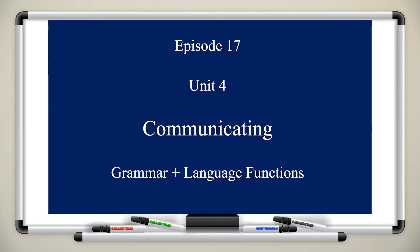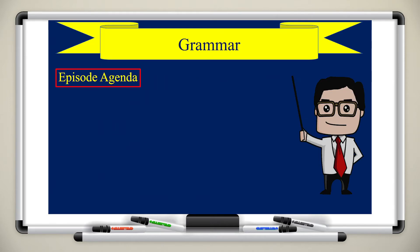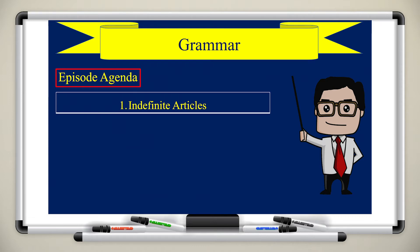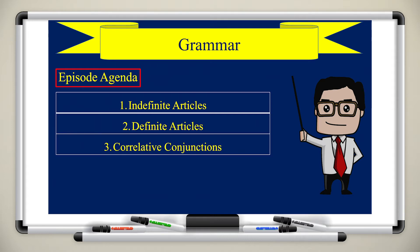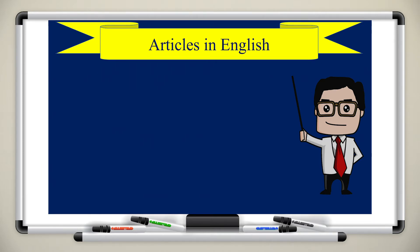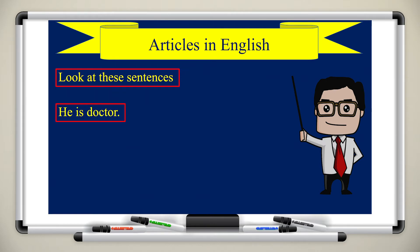Welcome to the educational channel. This is the second episode of Unit 4. In this episode we will discuss grammar plus language function. Looking at the episode agenda, we will talk about indefinite articles, definite articles, correlative conjunctions, and subordinating conjunctions.